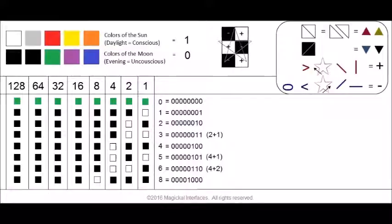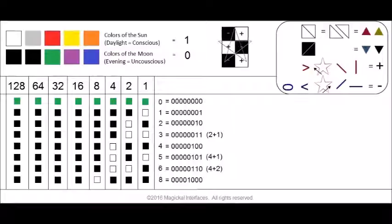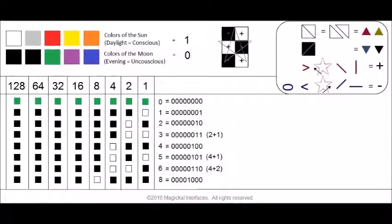In the third row we have the number 2, so the second column is turned on with a white square. The fourth row gives us the number 3, which is odd. Since each column is an even number, we turn on both column 2 and column 1 — two white squares — and 2 plus 1 equals 3. The next row gives us 4 using the same process of adding up the white squares.